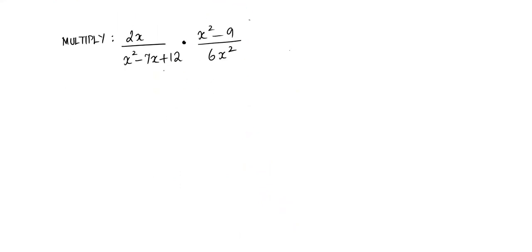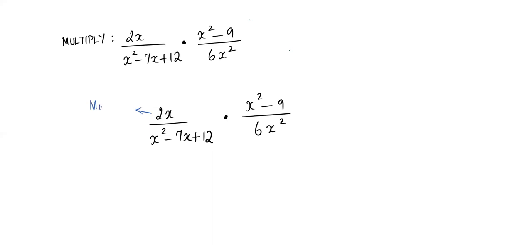Now let's look at the next problem. Clearly these are not monomials — we have a trinomial, a binomial, and so on. Let's write it out: x² minus 9 over 6x². The 6x² is a monomial — no factorizing needed. The trinomial has three terms; check for a GCF first, then use the BC method since the leading coefficient is one.